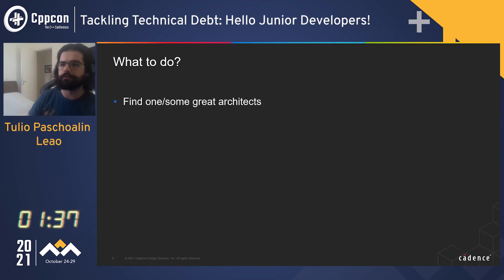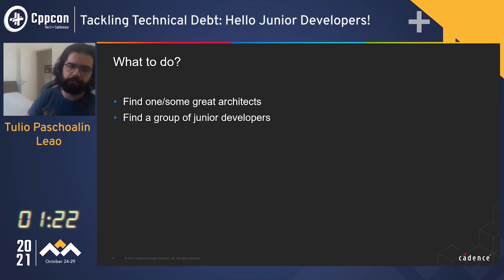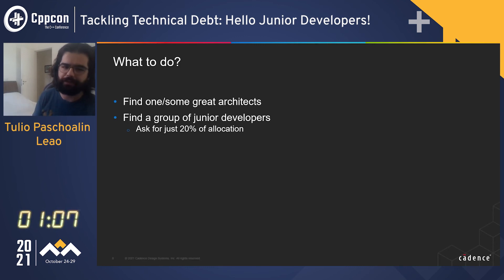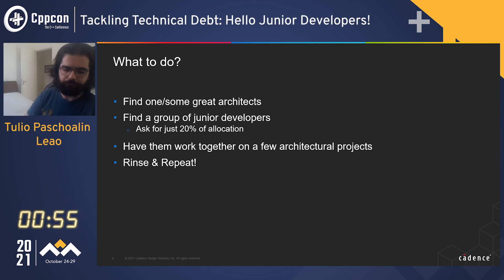So what should you do if you have a lot of technical debt but never get to solve it? Get one or some great architects — people with a lot of knowledge in the code who know what projects need to be done, but who are also passionate about teaching and steering the team. Then get a group of junior developers to do the work and follow the architects' lead. The tip here is that no manager will want to let go of a full resource, so ask for just 20% of their time. Everyone meets on one day, does the work, and all managers will be happy because the things that always bothered everyone will start getting dealt with.